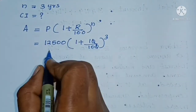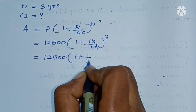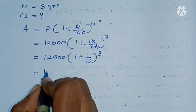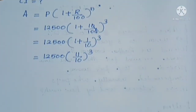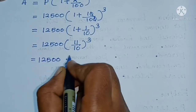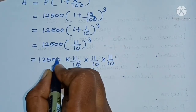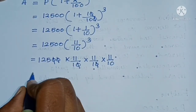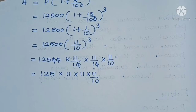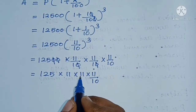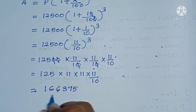The zeros cancel, so it becomes 12,500 into (1 plus 1 by 10) whole raised to 3, which is 12,500 into (11 by 10) whole raised to 3. Cancelling zeros, this becomes 125 into 11 into 11 into 11 by 10. Multiplying the numerators, we get 1,66,375 by 10.